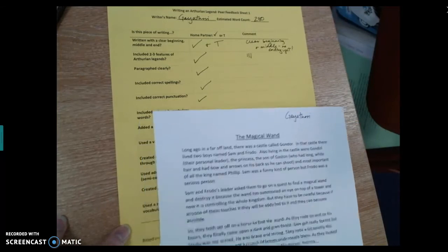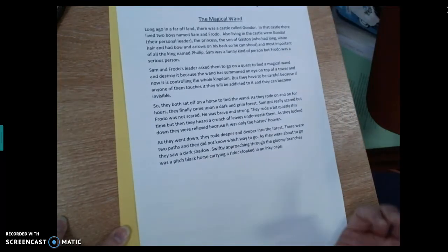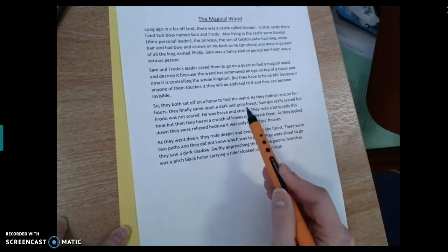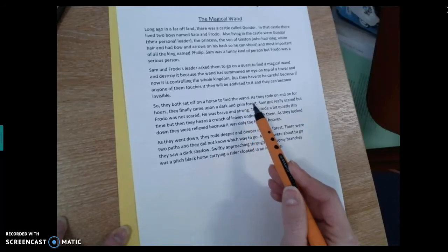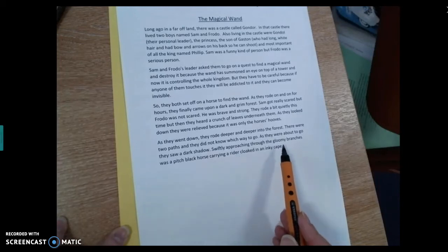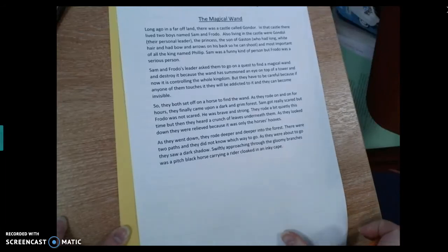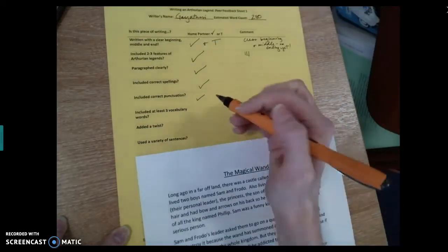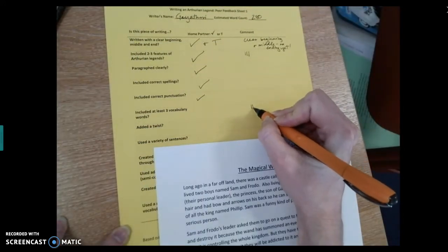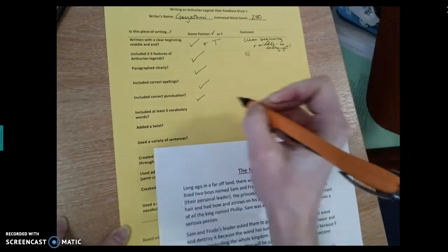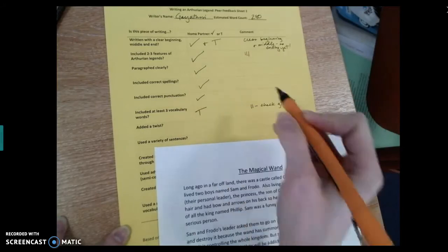Okay, has she included at least three vocabulary words? Let's see. So I spotted quest. So that's one. And I spotted grim. That's two. And then I also spotted, hmm, is gloom one of our vocabulary words? I can't remember. She definitely has two. I might check on gloom. I think those are the biggest ones. So I'm going to say check gloom. So I'm going to put target because there's something that needs to happen there.